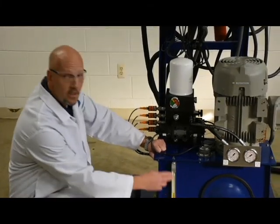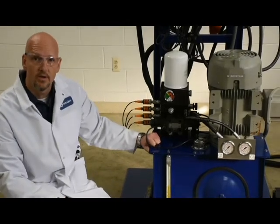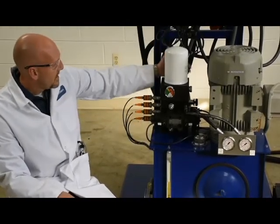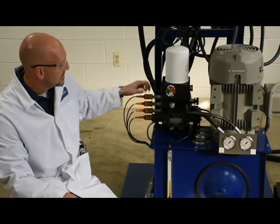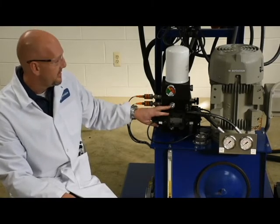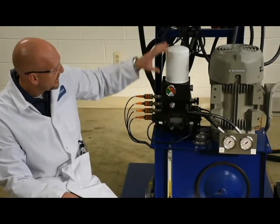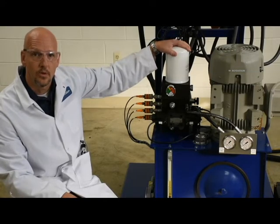You've got a nice little sight glass here to know how much oil you've got in it. And then you've got your manifold block that has all your valves, your pressure switches, all your control valves, your relief settings, and a filter that's located right on the top.